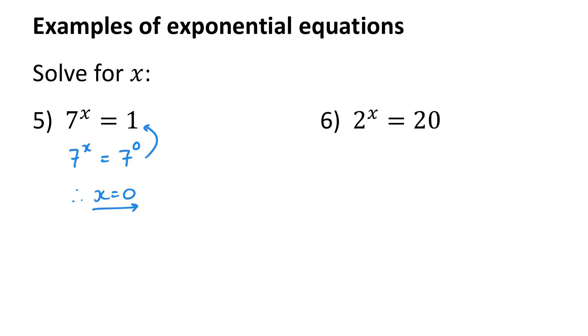Now in the last example, there's no way to write 20 with a base of 2. Let's quickly think: 2 squared is 4, 2 cubed is 8, 2 to the power of 4 is 16, and 2 to the power of 5 is 32. 20 isn't on my list. So all I know is that x must be between 4 and 5. Now at this stage, you won't know a strategy to solve an equation like this. So the best way is to work by trial and error.